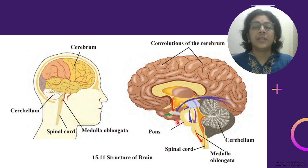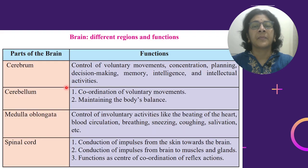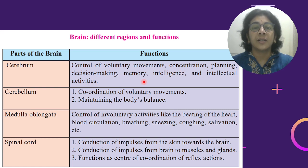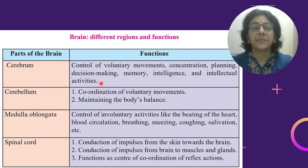We are going to see the parts of the brain and their functions. The cerebral function is to control voluntary movements, concentration, planning, decision-making, memory, intelligence and intellectual activities.